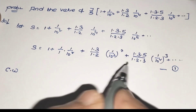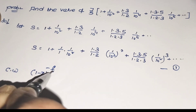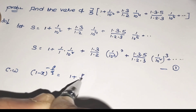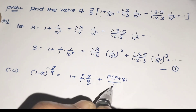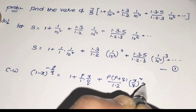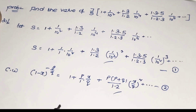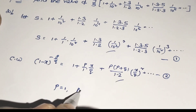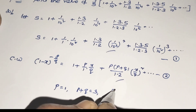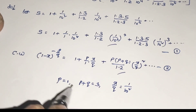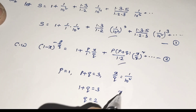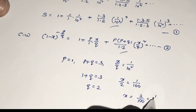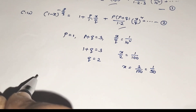Now doing the comparison: all terms are positive, so we compare with the formula (1−x)^(−p/q) = 1 + (p/1)×(x/q) + (p×(p+q))/(1×2)×(x/q)² and so on — equation 2. Comparing the third terms: p = 1, p + q = 3, x/q = 1/10² = 1/100. From p = 1: 1 + q = 3, so q = 2. Then x/2 = 1/100, so x = 2/100 = 1/50.